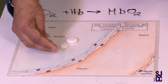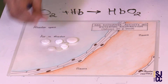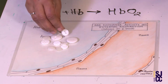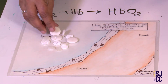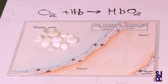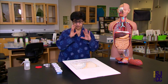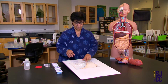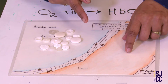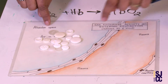These white buttons represent 16 oxygen molecules in the alveolus. Remember the principles of concentration gradient: things go from high concentration to low concentration, down the concentration gradient, until there is equilibrium. So I have 16 here and 0 in the plasma, so oxygen will keep moving into the blood, down the concentration gradient, until there is equilibrium.